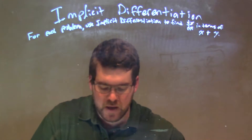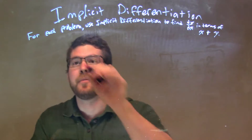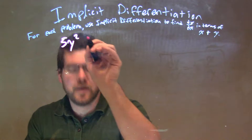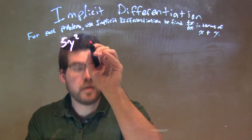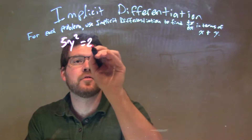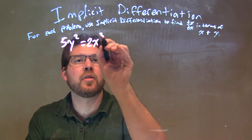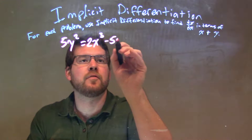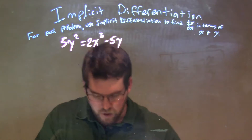If I was given this problem here: 5y squared equals 2x to the third minus 5y.